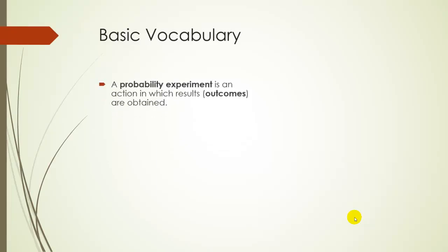A probability experiment is an action in which results, also called outcomes, are obtained. A sample point, also called a simple event, is a single possible outcome.